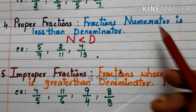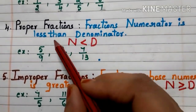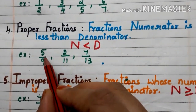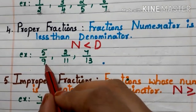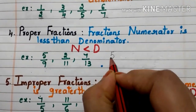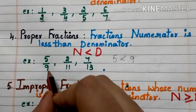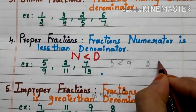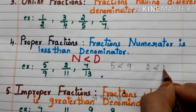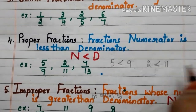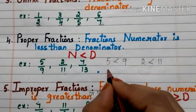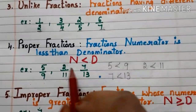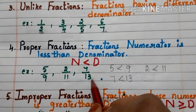Now, proper fractions. Fractions whose numerator is less than the denominator are called proper fractions. Here we have some examples. In 5 by 9, the numerator 5 is less than denominator 9, so 5 by 9 is a proper fraction. In 2 by 11, numerator 2 is less than denominator 11, so 2 by 11 is a proper fraction. In 7 by 13, the numerator 7 is less than denominator 13, so 7 by 13 is a proper fraction.